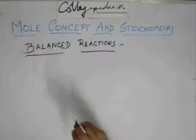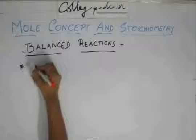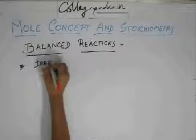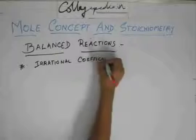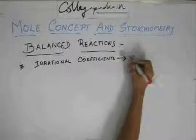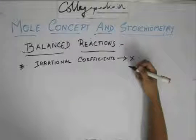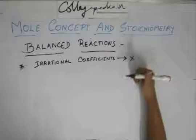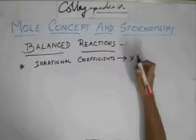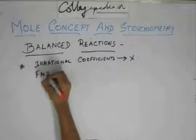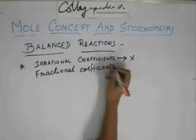Before going into the new method, some important points about balanced reactions: irrational coefficients are never allowed while balancing reactions, because it is the molecules which you are balancing. Molecules cannot be 1.356798, and you can't have root 2 or root 3 molecules. So irrational coefficients cannot be used. But this is a new thing — fractional coefficients can be used.